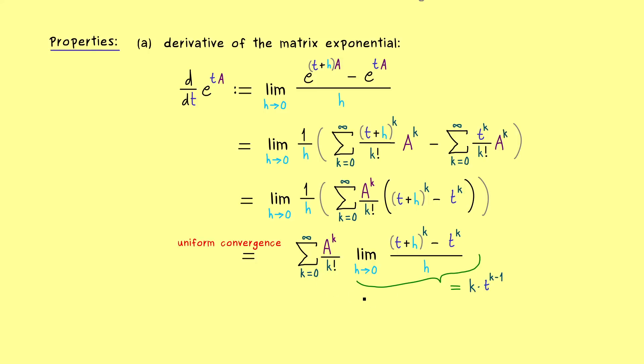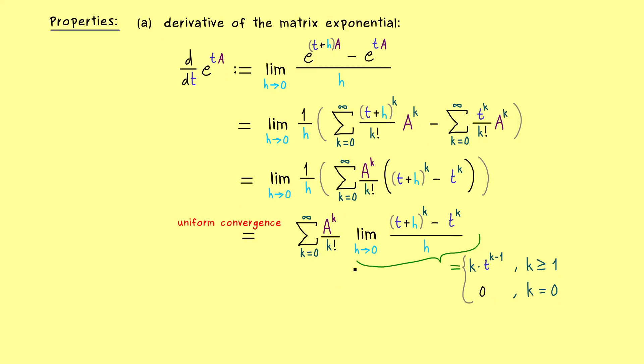This formula is correct for every k except for the case where k is equal to 0. There we just have a constant which has derivative 0 anyway. And this implies that we can drop the case k equals 0 altogether and we can start the sum at k equals 1.